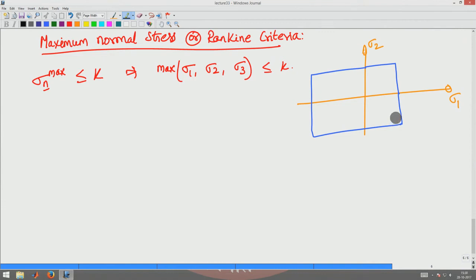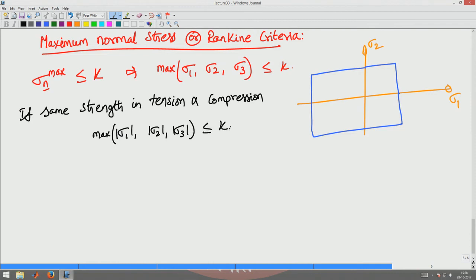If it has equal strength in tension and compression then I can use the following expression or I can put a modulus sign here. If same strength in tension and compression, then I can say max modulus of sigma 1, modulus of sigma 2, modulus of sigma 3 must be lesser than or equal to kappa.